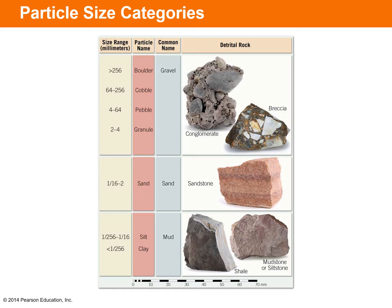The next major type of detrital sedimentary rock is sandstone, formed when particle sizes are between 1/16th and 2 millimeters. If you've walked on a beach or in a desert, you've walked on sand-sized particles — if buried, they often become lithified into sandstone. On the smaller end, if particle sizes are silt (1/256th to 1/16th mm) to clay (less than 1/256th mm), you get shale, mudstone, or siltstone.